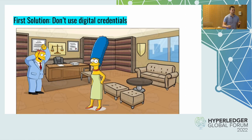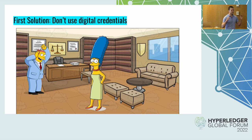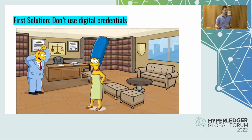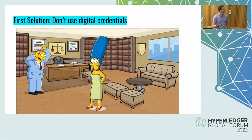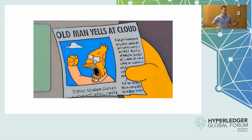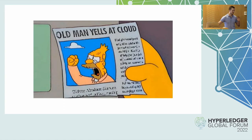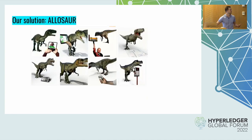Solution number one is: do not use digital credentials. I feel a bit out of place saying this here, but I have to say my piece. There are lots of cases where you don't need to put credentials on the internet. The systems we have now with physical credentials are working fine and don't create these privacy issues. The privacy issues you might be creating could be worse for a lot of people than the convenience benefits you'd get. But okay — you have put your credentials on the internet. You have made them digital. Can you do this anonymously?